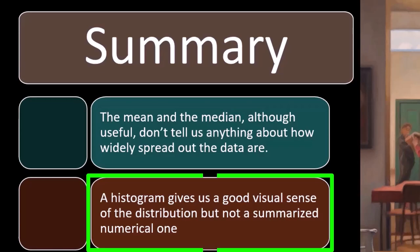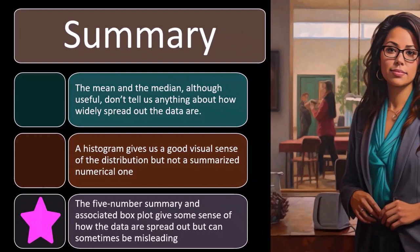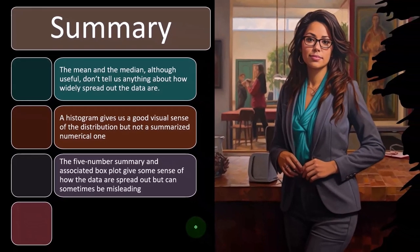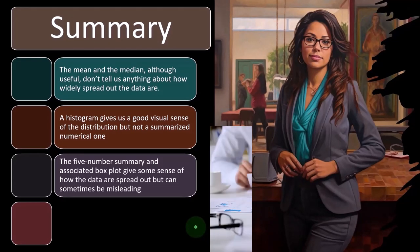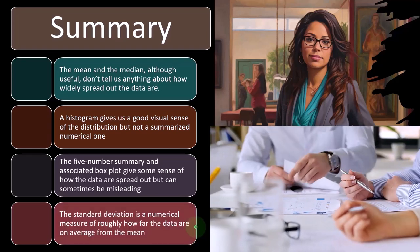So the histogram is great, but we'd also like to have a numerical representation. The five-number summary, you might say, and associated box plot gives some sense of how the data are spread out, but can sometimes be misleading. We'll do some examples to show that. So you might say, hey, the five-number summary gives me a nice picture of the spread of the data to some degree, but we'll actually show an example to show where it falls short sometimes, where we have two very different data sets, which actually result in the same five-number summary and box and whiskers plot as well.